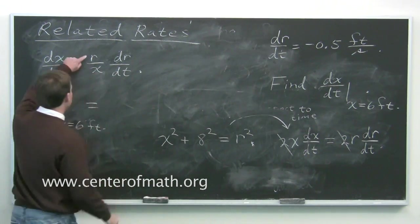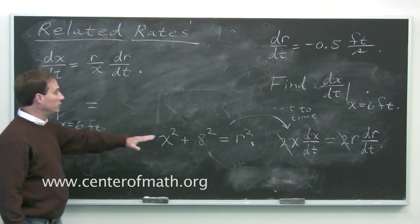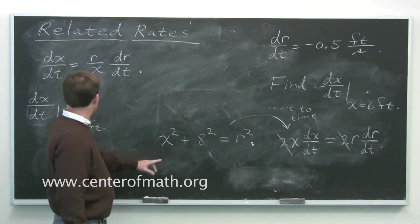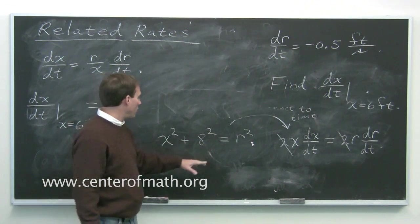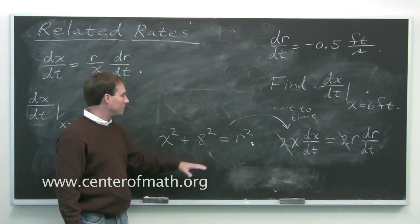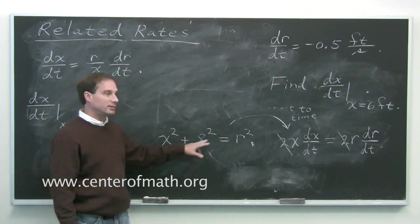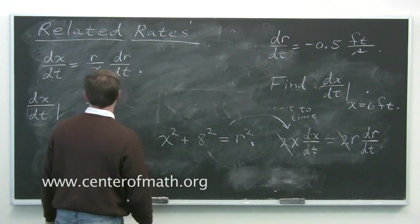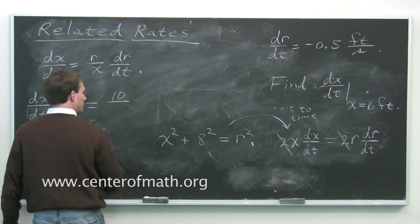Well, we need to know r when x is 6 feet. You use this equation again, the Pythagorean theorem. When x is 6, what's r? Well, it's a 3, 4, 5 right triangle except it's a 6, 8, 10 right triangle. If x is 6, r would be 10. So you get r is 10.